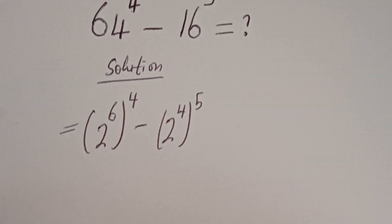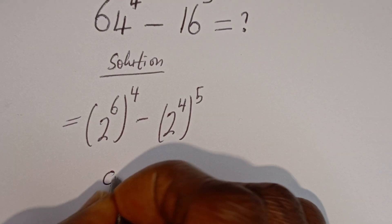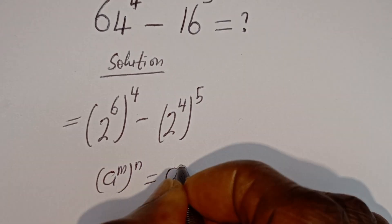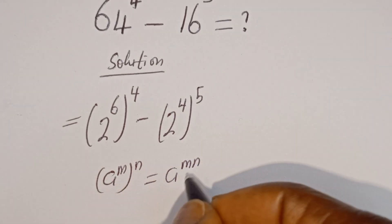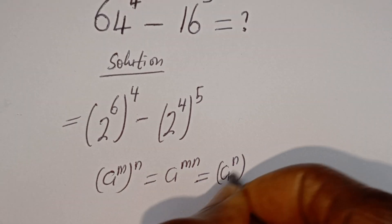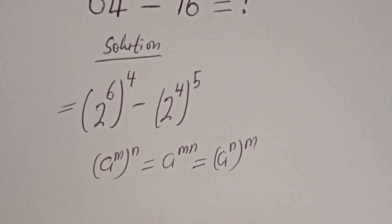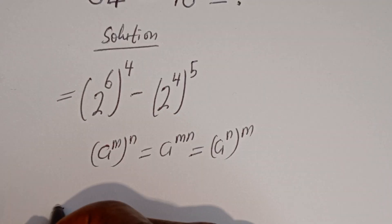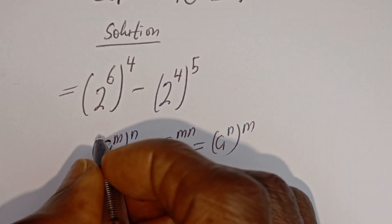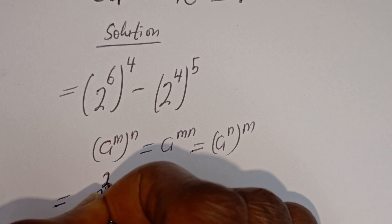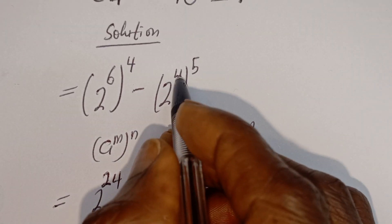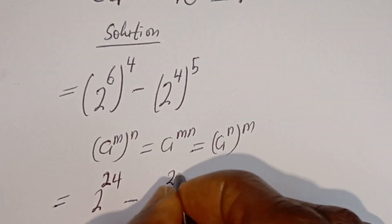Take note that if you have A to the power of M to the power of N, this is equal to A to the power of N times M. Then this can be written as 2 to the power of 6 multiplied by 4, that is 24, minus 2 to the power of 4 multiplied by 5, that is 20.